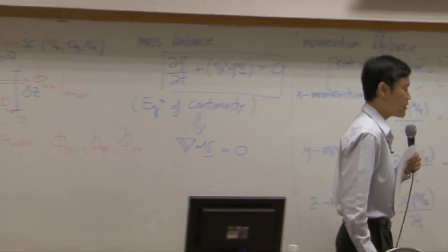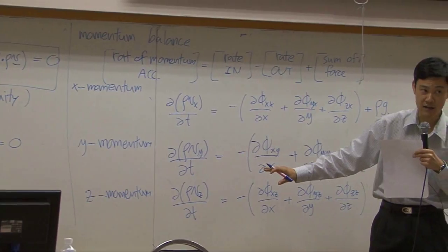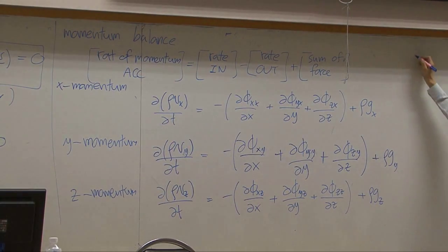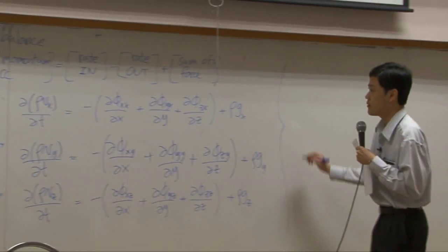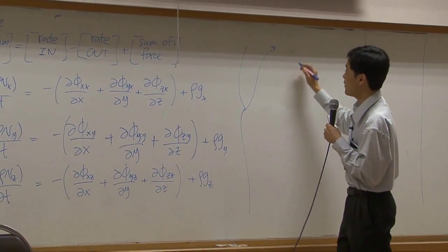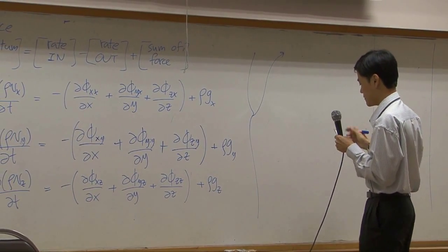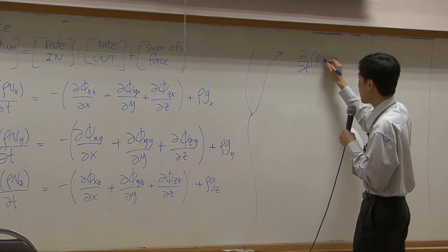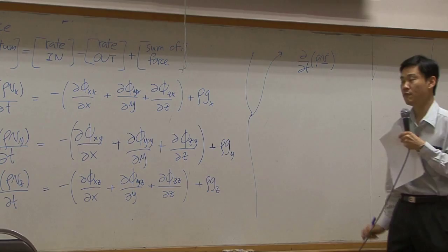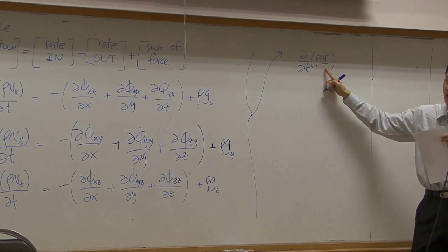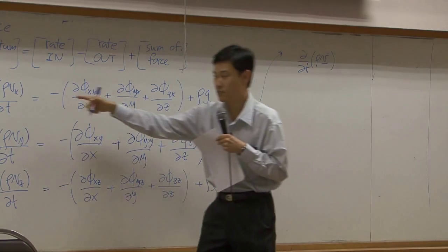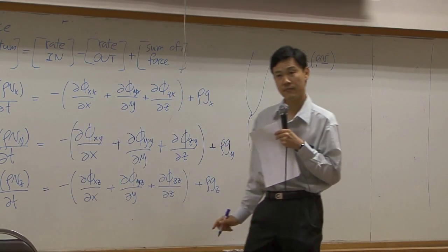So the terms on the left-hand side, you can combine these three terms and represent it. I can write down something like this: d by dt of rho v. This one would be vector instead. This single term represents these three terms.